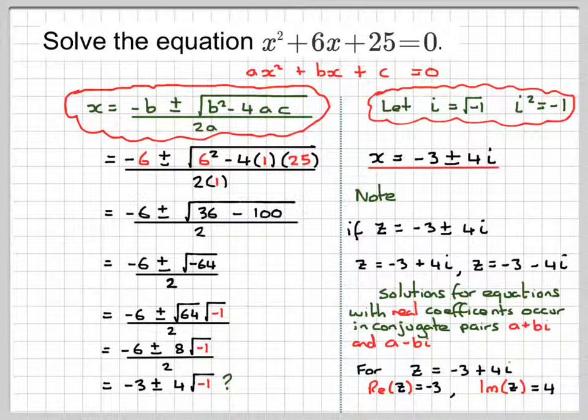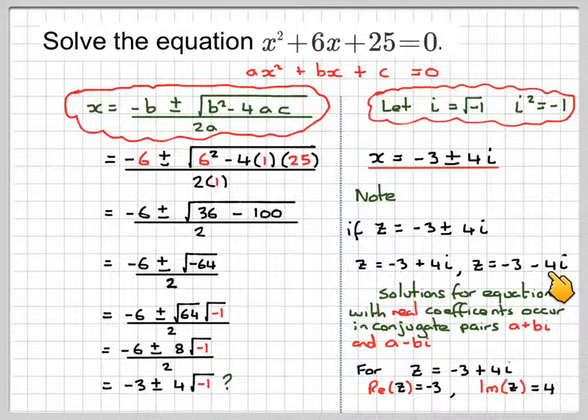And for two complex numbers to be equal, the real part and the imaginary part will have to be equal. The imaginary part for this number would be minus 4.